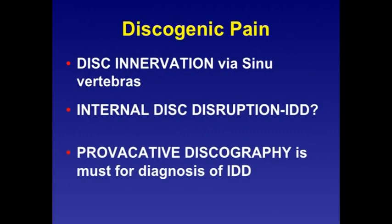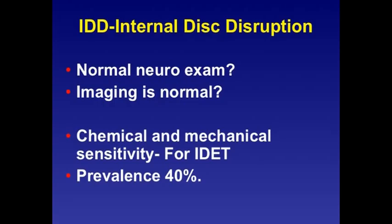Discogenic pain: the discs are innervated primarily by the sinuvertebral nerve. The most common etiology is internal disc disruption (IDD). The test used for diagnosis of IDD pain is provocative discography. Pain generated from the discs typically shows a normal neurological exam, and imaging is questionable. Treatment of internal disc disruption includes intradiscal electrothermal coagulation (IDET). The prevalence of IDD pain is about 40%.